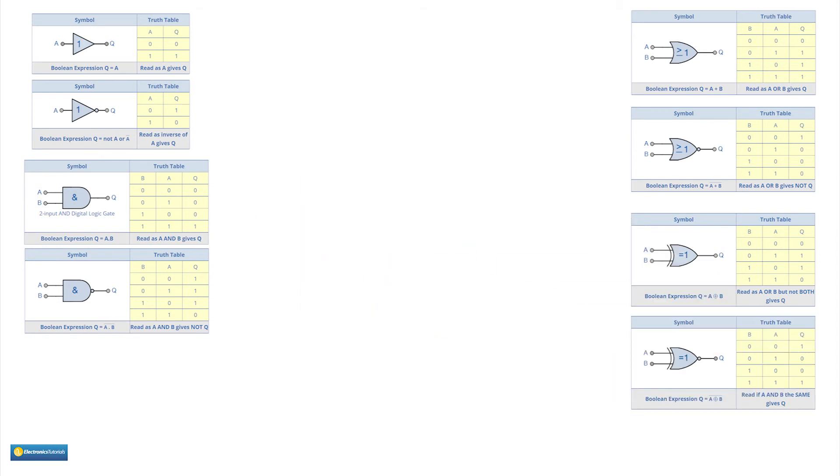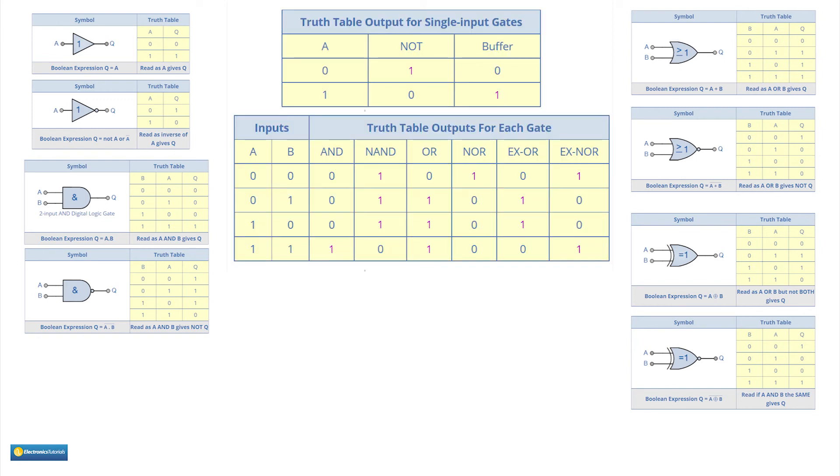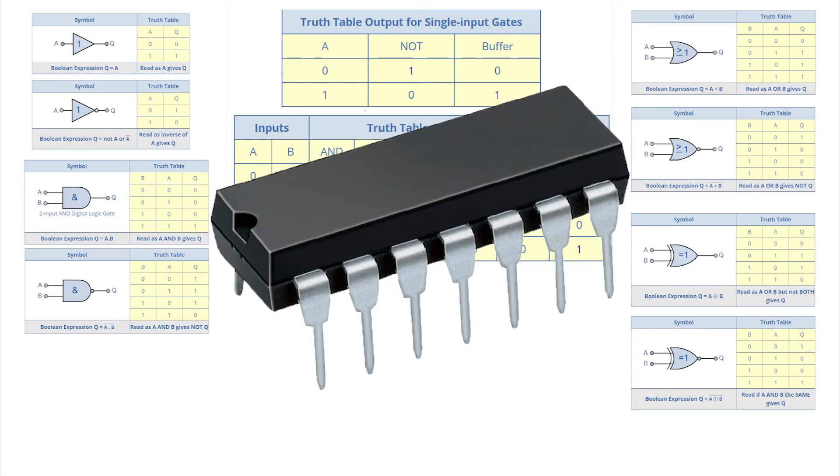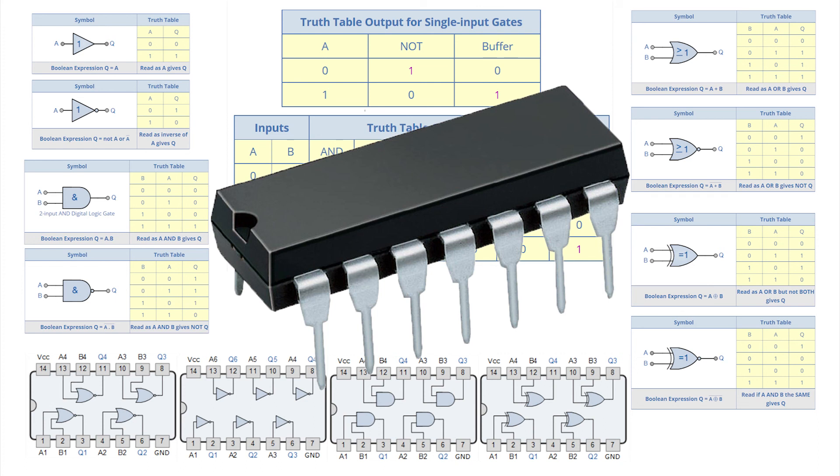This completes all the possible combinations of logic applied to one and two input gates. You can purchase a range of different gates for breadboarding in packages such as this. The diagrams show how these gates are connected.